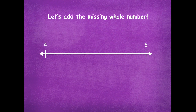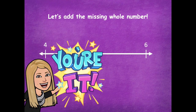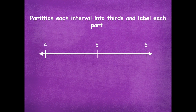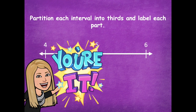Now we're going to label between four and six again on our number line and label those missing whole numbers. Pause the video and do that same thing with this brand new number line, then click play. Between this one we only need a five — so our missing whole number is just five. Now pause the video, partition each interval between four and five and between five and six into thirds, and label each part, then click play when you're ready to go over it together.